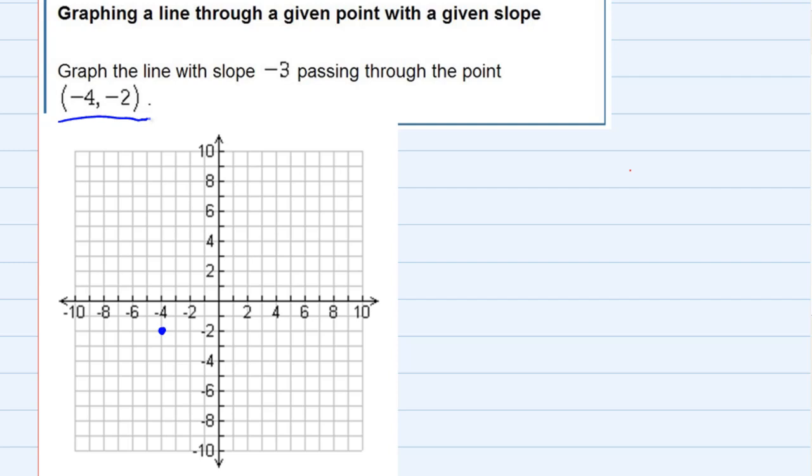If I had another point, I could connect them with a straight line and we'd be done. But they didn't give me another point, they gave me the slope.